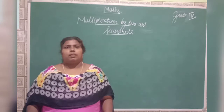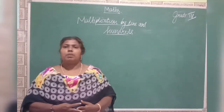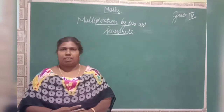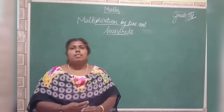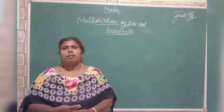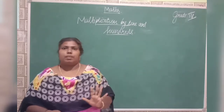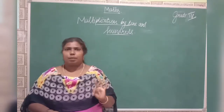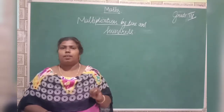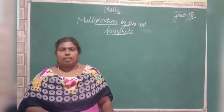Good morning children. In our previous class, do you remember what we have learned? We have learned properties of multiplication. How many properties do you remember? Five properties: associative property, commutative property, distributive property, identity property, and zero property.